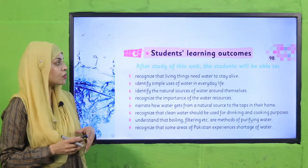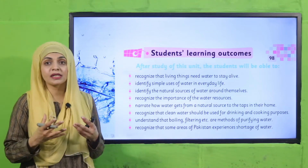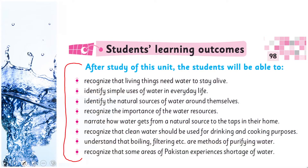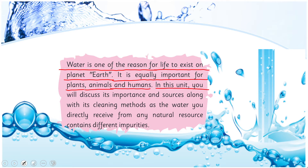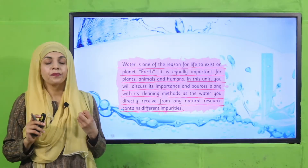On page number 98-99, all the student learning outcomes are given — these are for the parents and teachers to understand that by the end of this unit, all students will be able to understand these points. In this unit, students will learn about water as one of the reasons for life to exist on planet Earth — it is equally important for plants, animals, and humans. You will discuss its importance and sources along with its cleaning methods.